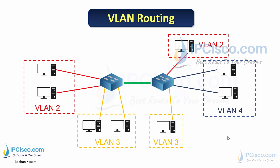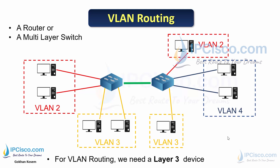What is VLAN routing and why do we use it? By default, there is no routing between VLANs, so devices in different VLANs cannot communicate with each other. To enable communication between different VLANs, we should enable VLAN routing using a Layer 3 device — either a router or a multi-layer switch. As shown on screen, a router enables VLAN routing so that PC1 in VLAN 2 can communicate with PC5 in VLAN 4.